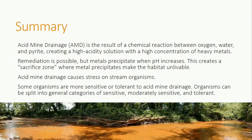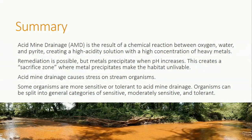To recap the lesson: acid mine drainage is the result of a chemical reaction between water, oxygen, and pyrite, creating a high acidity solution with a high concentration of heavy metals. Remediation is possible, but metals precipitate when pH increases. This creates a sacrifice zone where the metal precipitates make the habitat unlivable. Acid mine drainage causes stress on stream organisms. Some organisms are more sensitive or tolerant to acid mine drainage. Organisms can be split into general categories of sensitive, moderately sensitive, and tolerant.